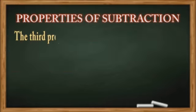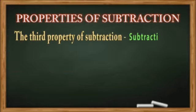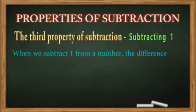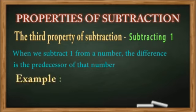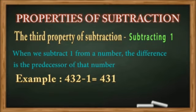The third property of subtraction is subtracting one: when we subtract one from a number, the difference is the predecessor of that number. For example, subtracting one from 432 gives 431, which is the predecessor of 432. Predecessor means the number that comes just before the given number.